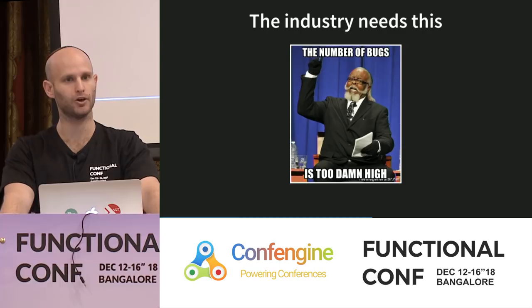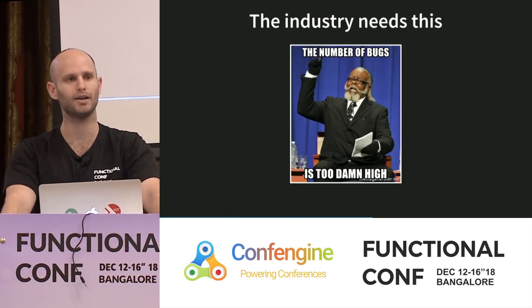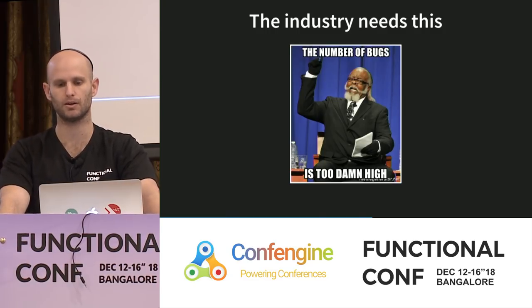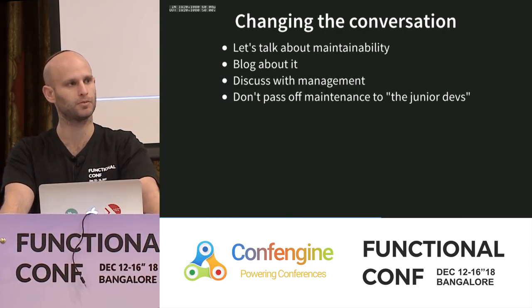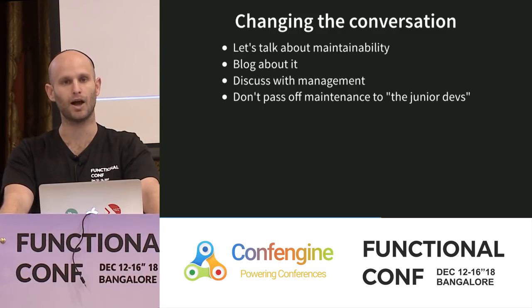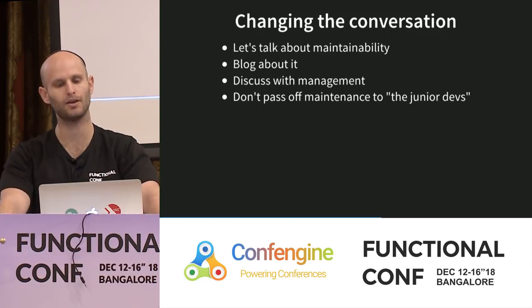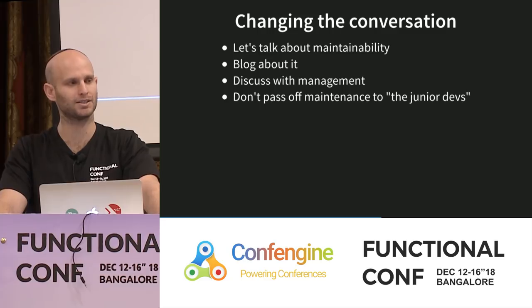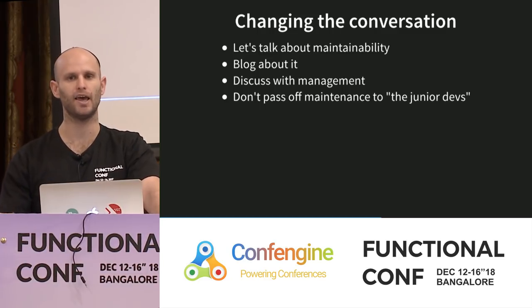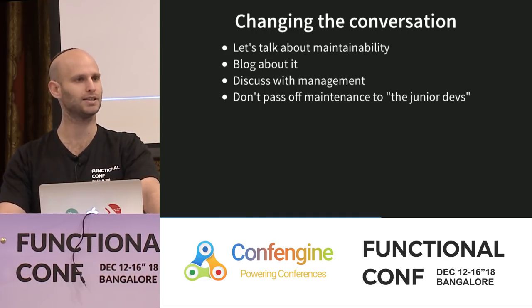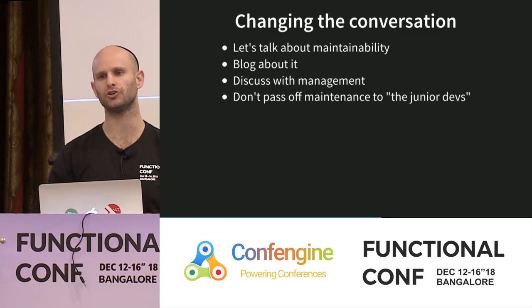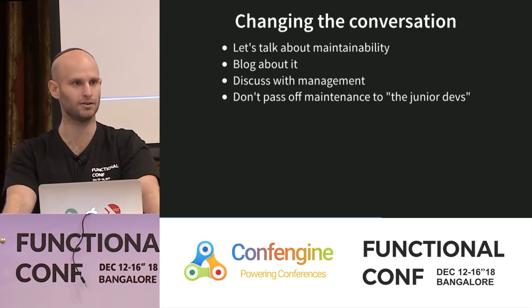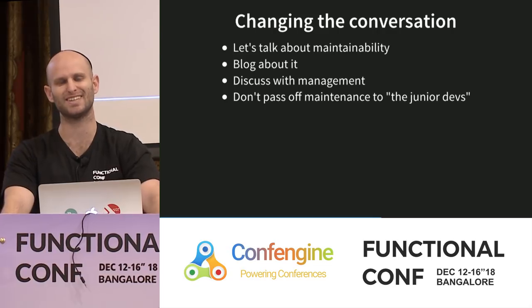Our industry needs to improve. We write buggy code, unmaintainable code, and it is not uncommon to do full rewrites for V2 — that's not the way things should be. My encouragement to everyone comes down to this: I want us to change the conversation and start talking about maintainability more, in blog posts, social media, and with our managers. Next time management says what language should we use, the question should be how difficult is it going to be to maintain this in Language X versus Language Y. And don't pass maintenance off to the junior devs — maintenance is hard work that even senior developers struggle with.